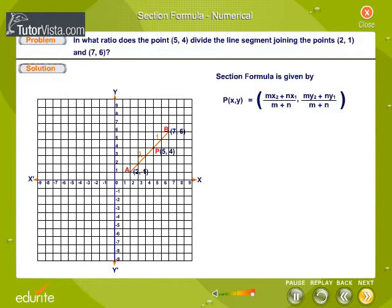The section formula is given by P(x,y) is equal to mx2 plus nx1 divided by m plus n comma, my2 plus ny1 divided by m plus n.